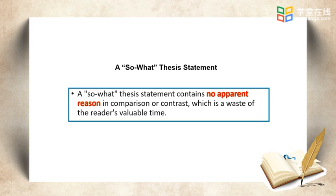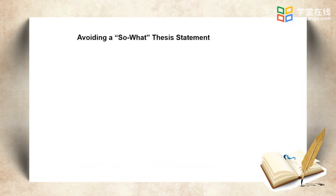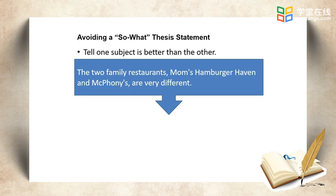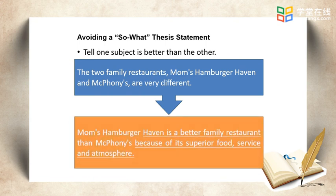Then what can we do to avoid such thesis statements? One of the ways is to tell one subject is better than the other. Do you remember the article we've read and analyzed, John and Paul? It's written to bring the two subjects into sharp contrast so as to show Paul makes a better boyfriend than John. So, we can revise this thesis statement by adding the point that Mom's Hamburger Haven is a better family restaurant than McFourney's. From the new thesis statement, we not only know the two subjects and the differences, but also the purpose of explaining the three differences.